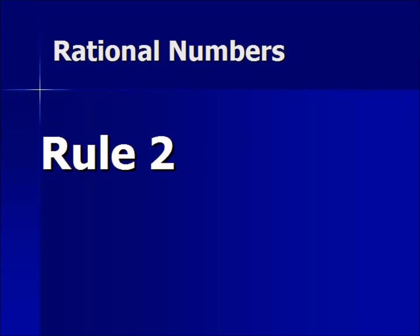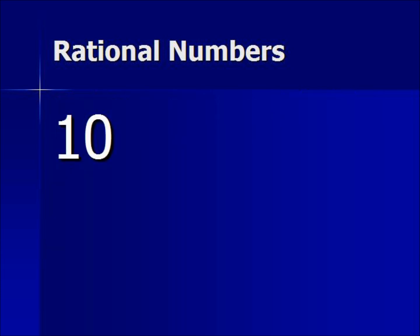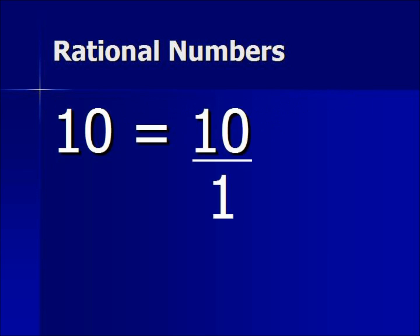Rule 2: Rational numbers can be expressed as a ratio A over B, where B cannot be 0. Let's begin with the number 10. We can express 10 as a ratio 10 over 1. We can also express 10 as a fraction 20 over 2. So we see 10 is rational because we can express it as a ratio.